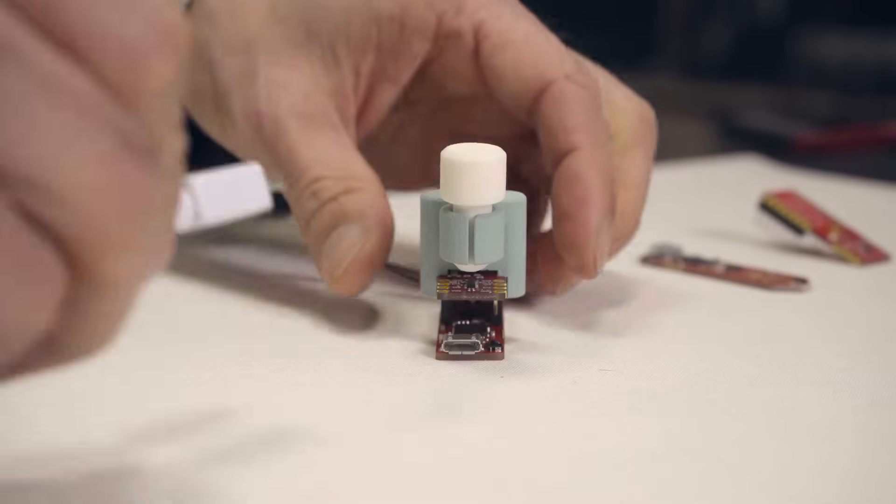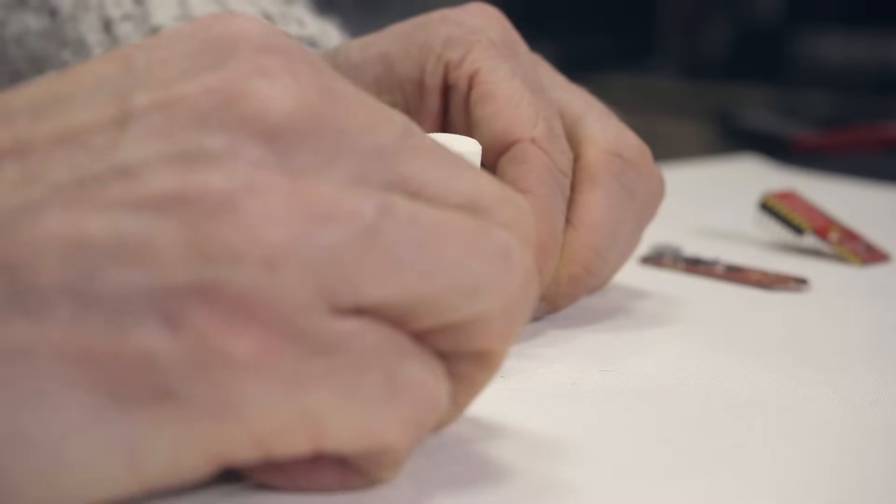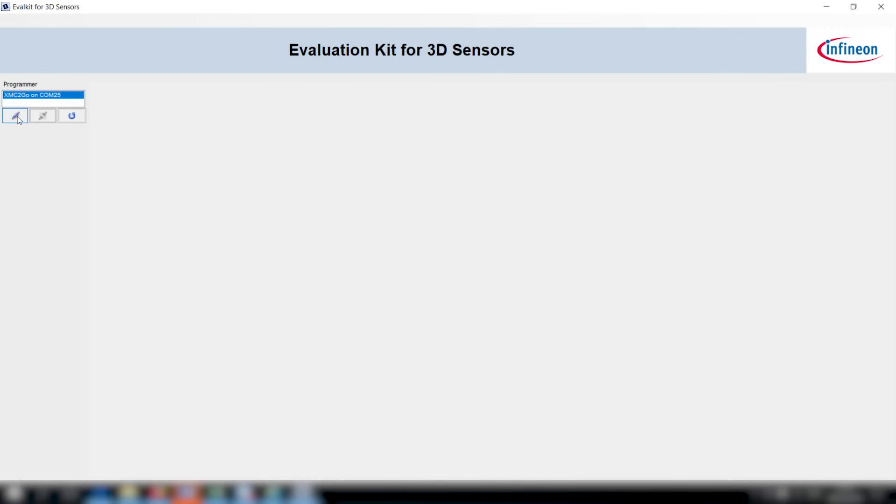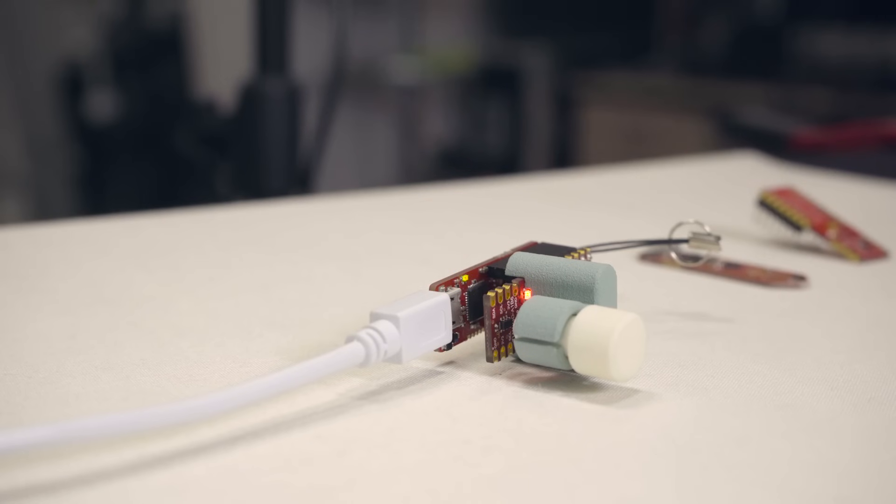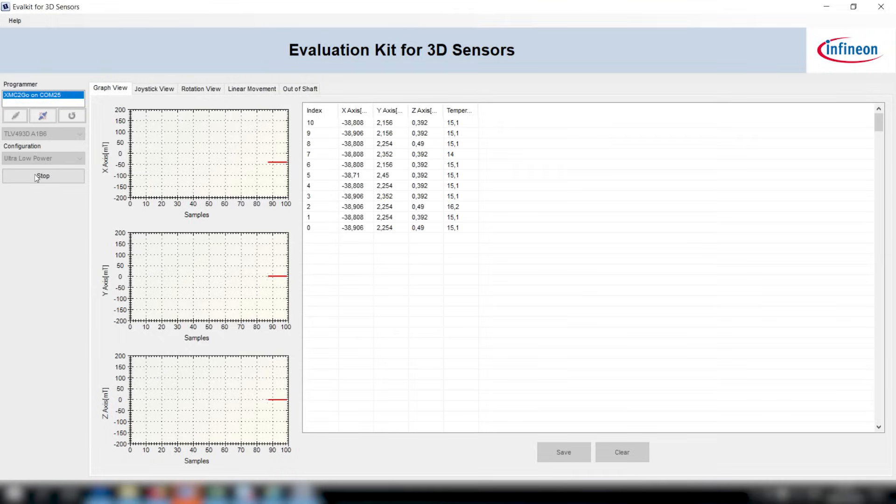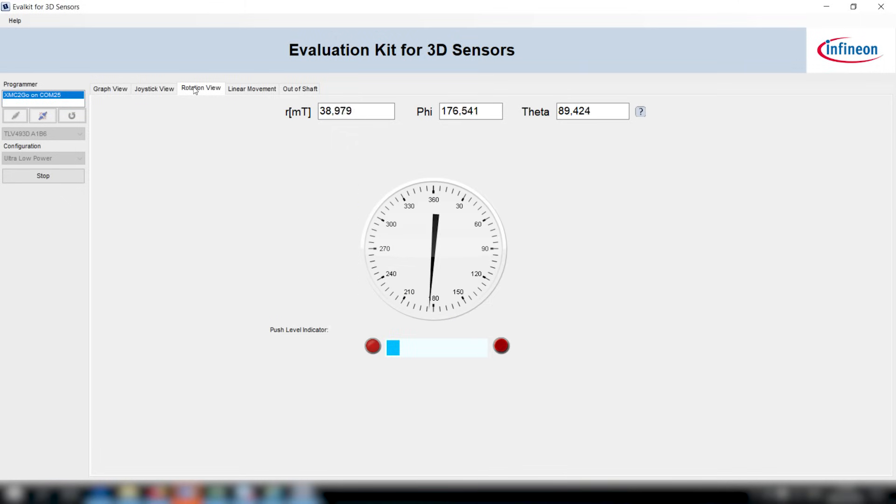In order to show you the Infineon graphical user interface, I just plug in here the hardware. The software recognized that the hardware is now connected, and you press here the start button. At the first view, you can see just the numbers measured by the sensors.